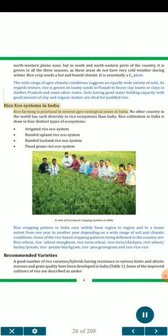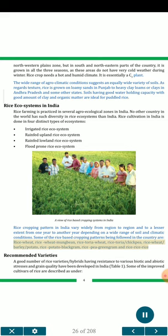Rice Ecosystems in India: Rice farming is practiced in several agro-ecological zones in India. No other country in the world has such diversity in rice ecosystems as India. Rice cultivation in India is done in four distinct types of ecosystems: irrigated rice ecosystem, rainfed upland rice ecosystem, rainfed lowland rice ecosystem, and flood-prone rice ecosystem. Rice cropping patterns in India vary widely from region to region and from one year to another, depending on a wide range of soil and climatic conditions.